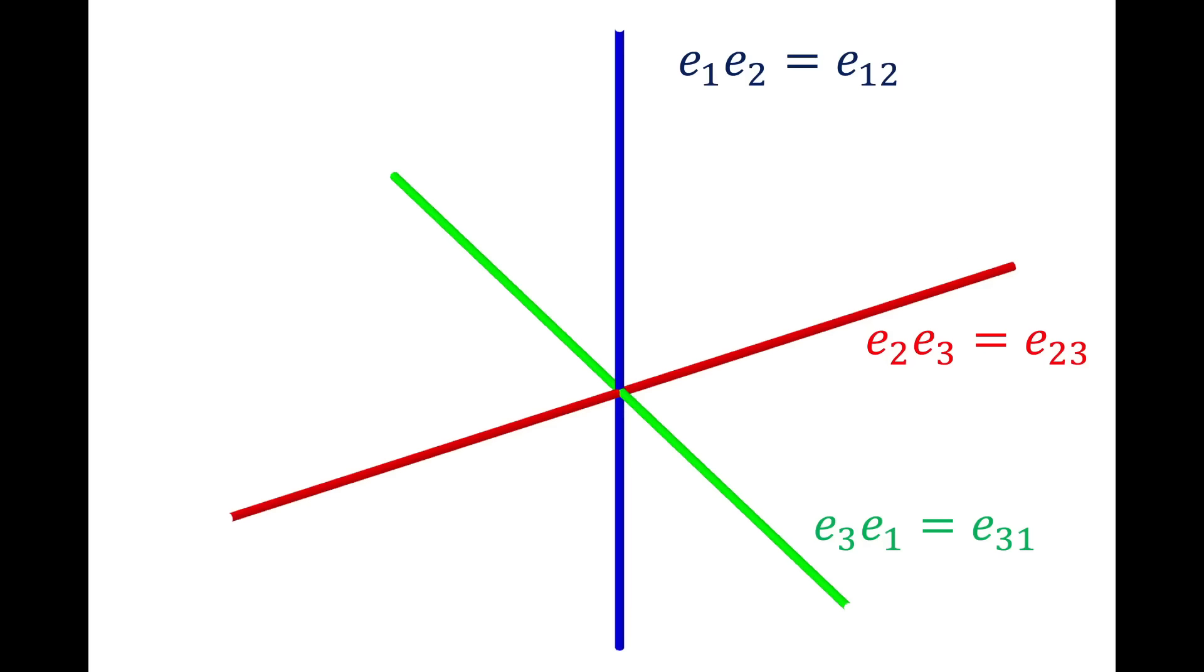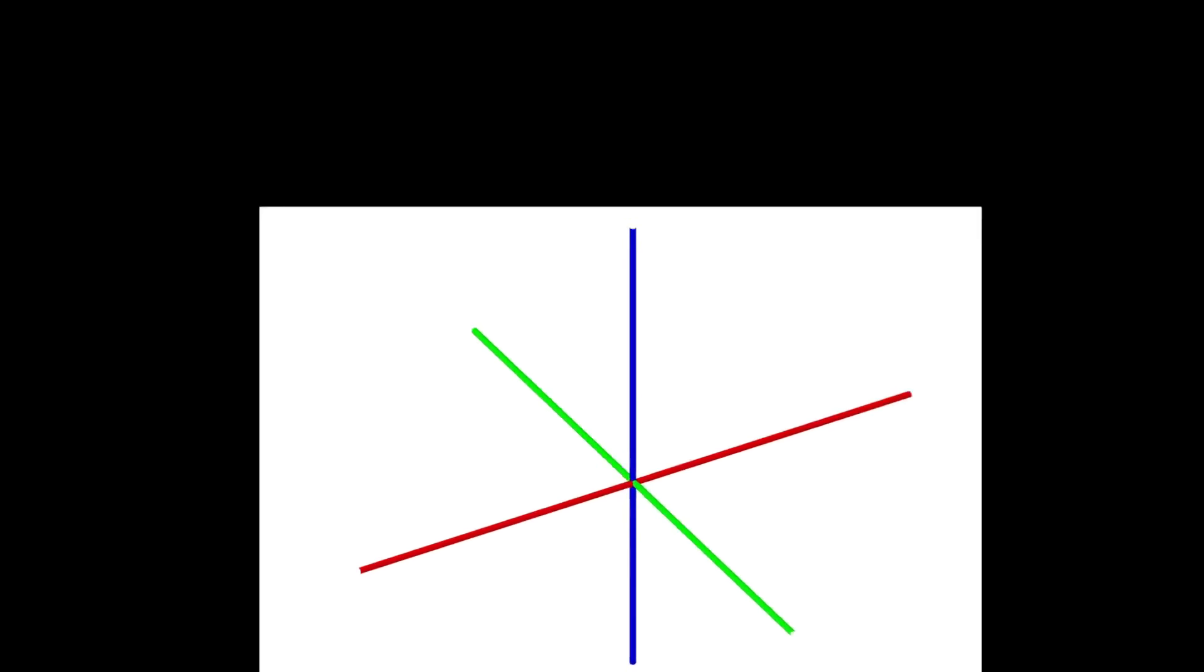What if we were to consider the intersections formed by these planes? Then we would have three separate lines. For those wondering about the lines coloring, I've colored the lines according to the plane to which they are orthogonal. e12 is orthogonal to the e3 plane, e23 is orthogonal to the e1 plane, and e31 is orthogonal to the e2 plane.